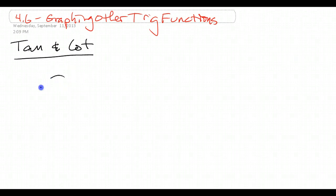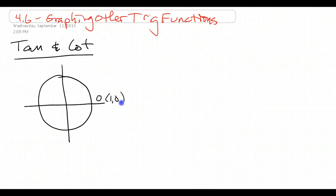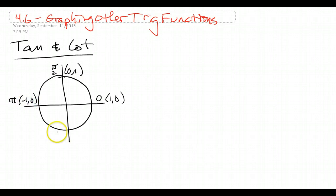Let's take a look at the unit circle and look at our quadrant angles. Over here at 0, I've got (1, 0). Over here at pi over 2, I've got (0, 1). Over here at pi, I have (-1, 0). Down here at 3 pi over 2, I've got (0, -1), and then back over here at 2 pi, I have (1, 0) again.